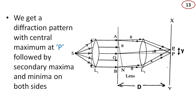The diffracted light on the screen will be focused by using lens L2. We get a diffraction pattern with central maximum at P, followed by secondary maxima and minima on both sides.